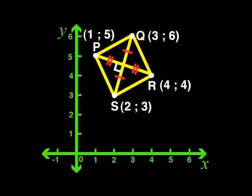And that means the diagonals are perpendicular to one another. So we have shown that this shape's diagonals bisect at 90 degrees. It is therefore a rhombus. Well done!